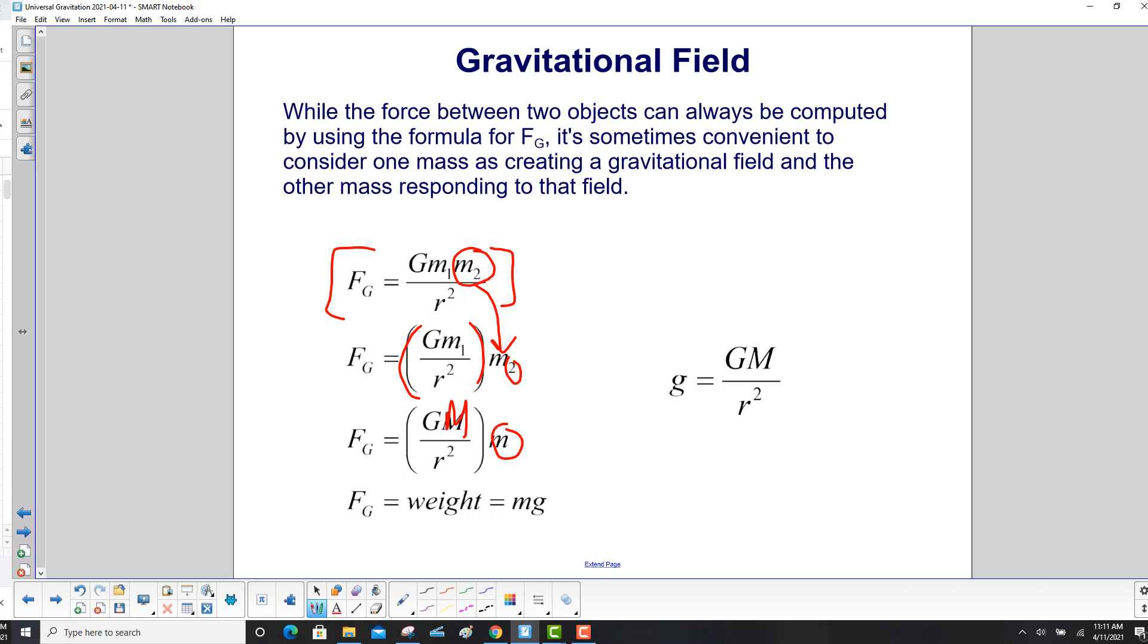And we're going to call that equation the weight equation. It equals M times little g, not big G, which is a gravitational constant, but little g which will be big G times the mass of this big object divided by the distance squared of the little object from the center of the big mass.